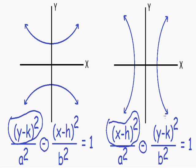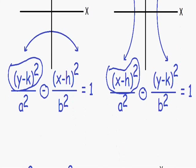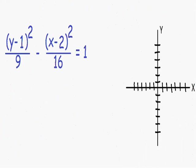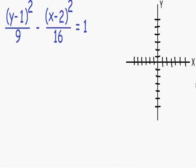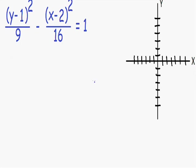Having said that, we are ready to get started with our example. Here we have: (y − 1)² / 9 − (x − 2)² / 16 = 1. We know this is a hyperbola because of the minus sign in between the two terms.